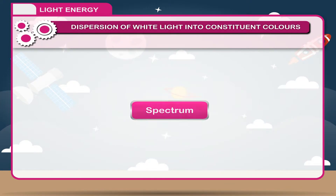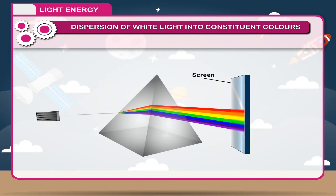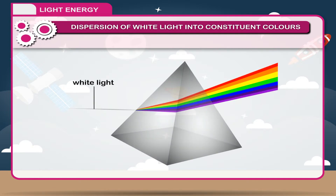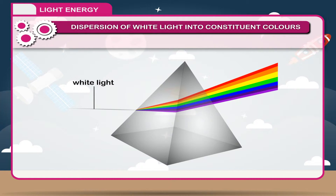Spectrum: The colour band obtained on the white screen as a result of dispersion of white light while passing through a prism is called spectrum. Some important facts about spectrum: 1. White light is a mixture of seven colours — violet, indigo, blue, green, yellow, orange, red.